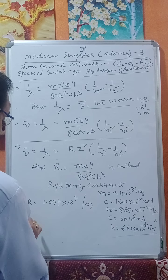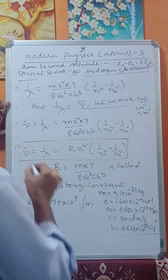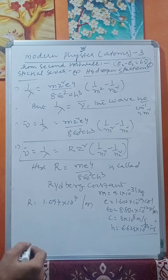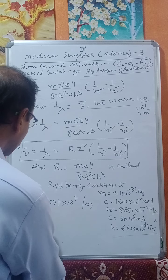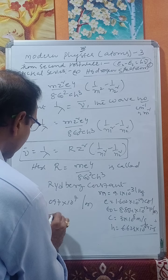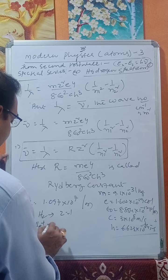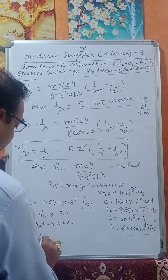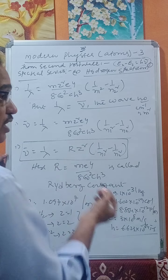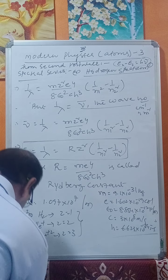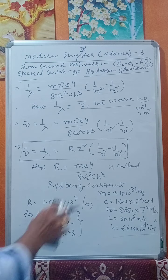This is the most important expression used in problems: ν̄ equals 1/λ equals R·z²·(1/n1² minus 1/n2²). For hydrogen, z equals 1; for singly ionized helium, z equals 2; for doubly ionized lithium, z equals 3.